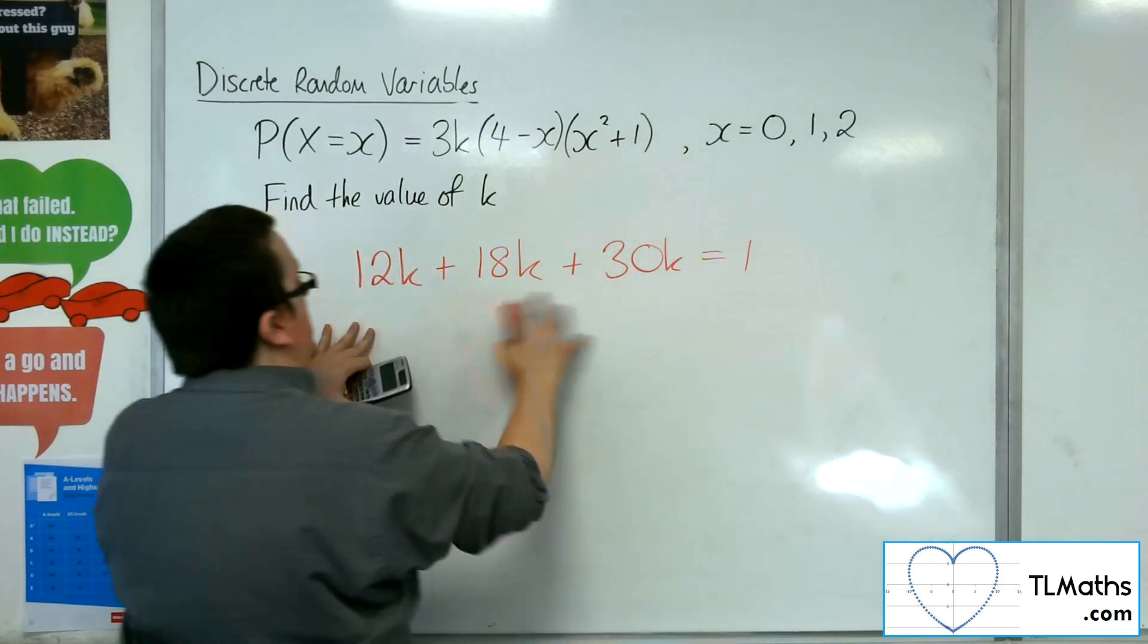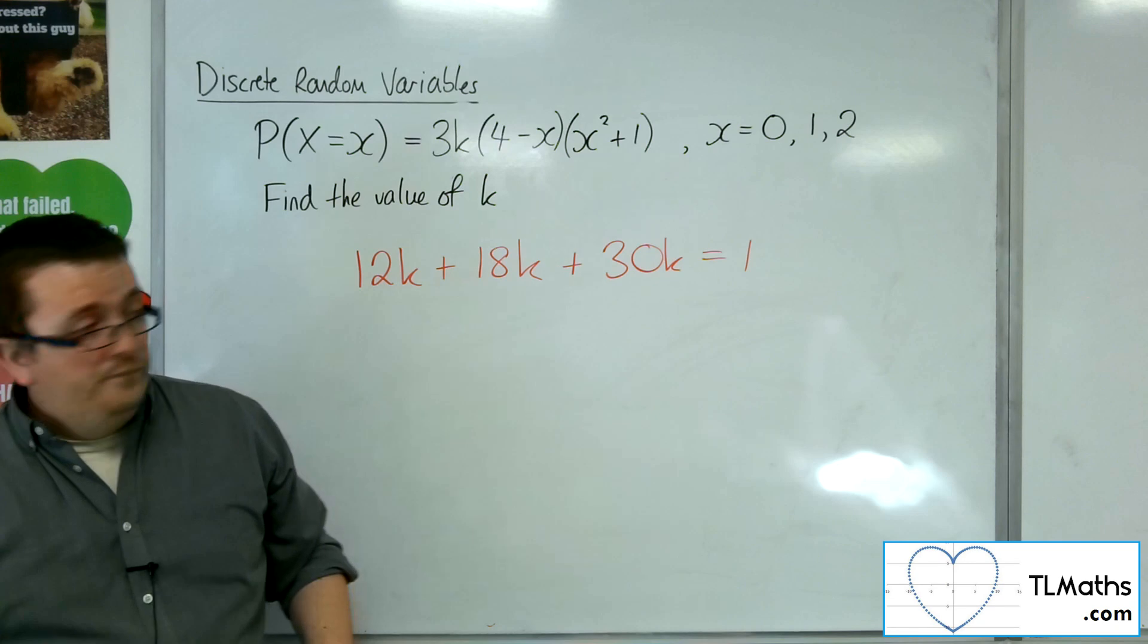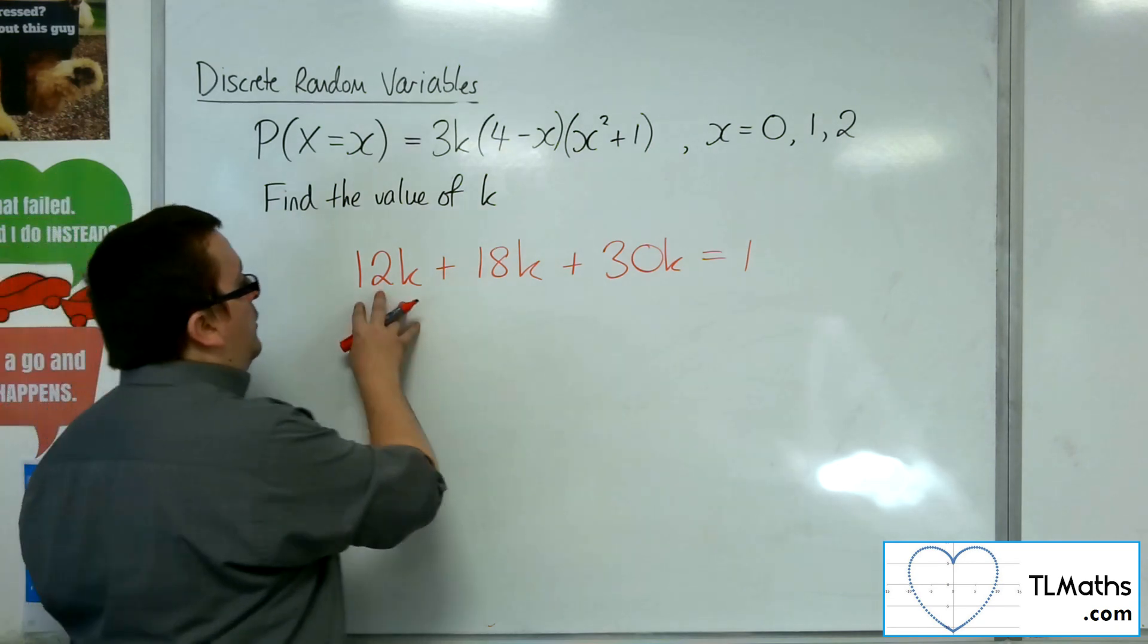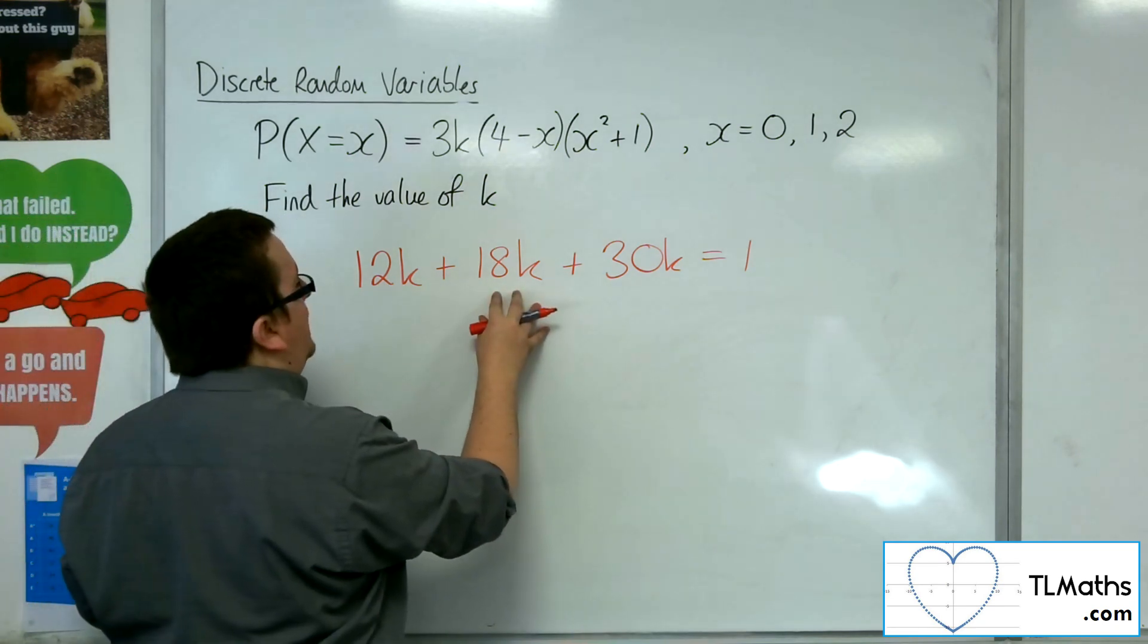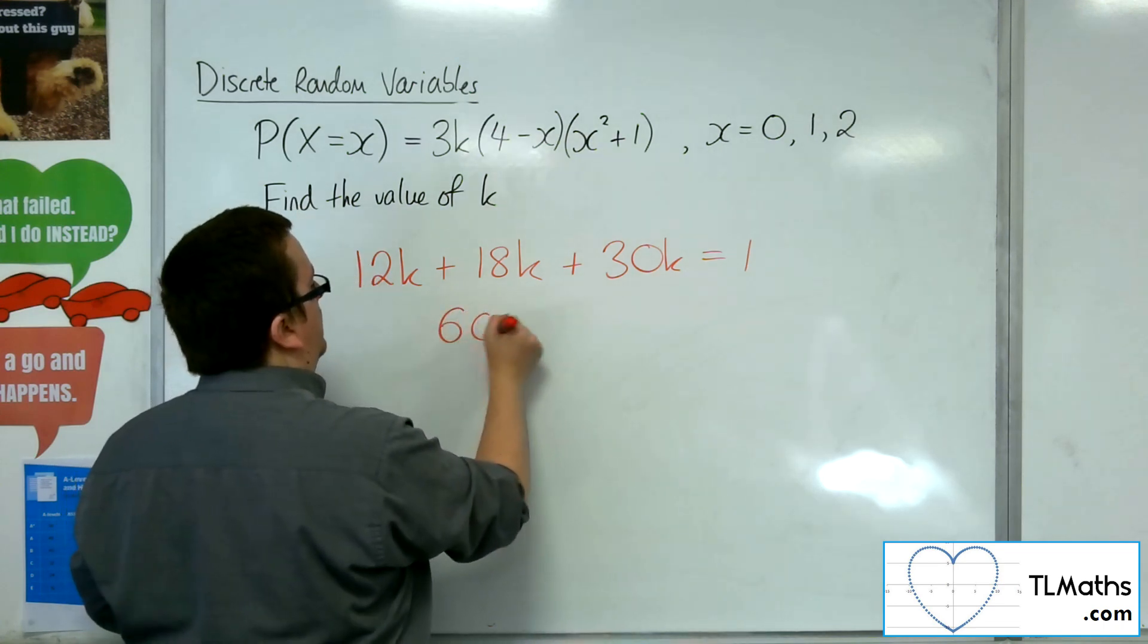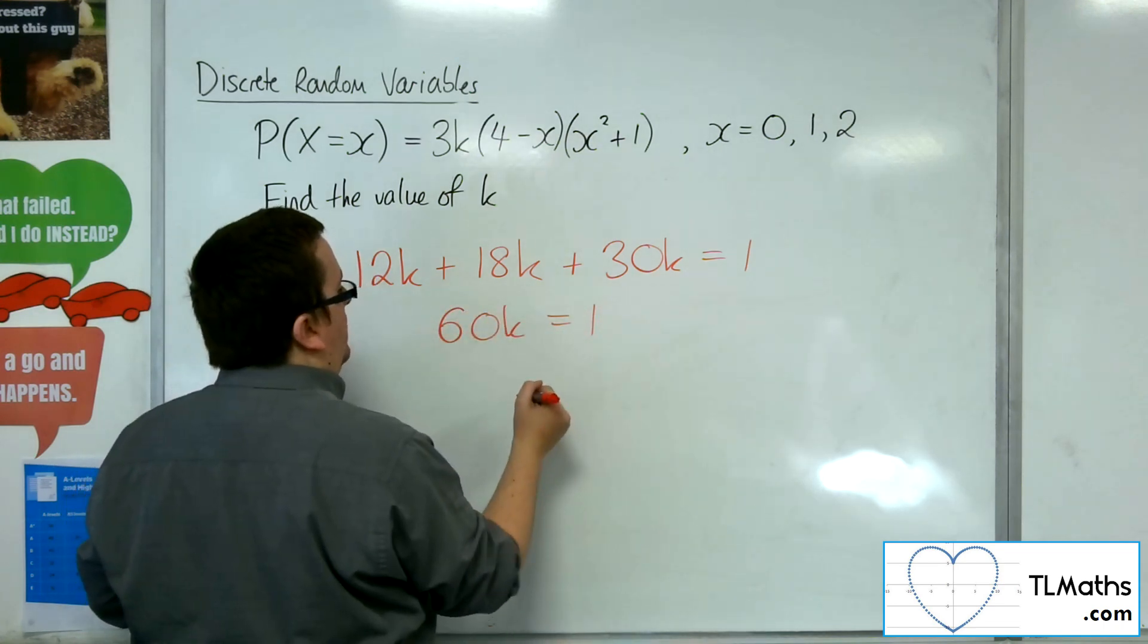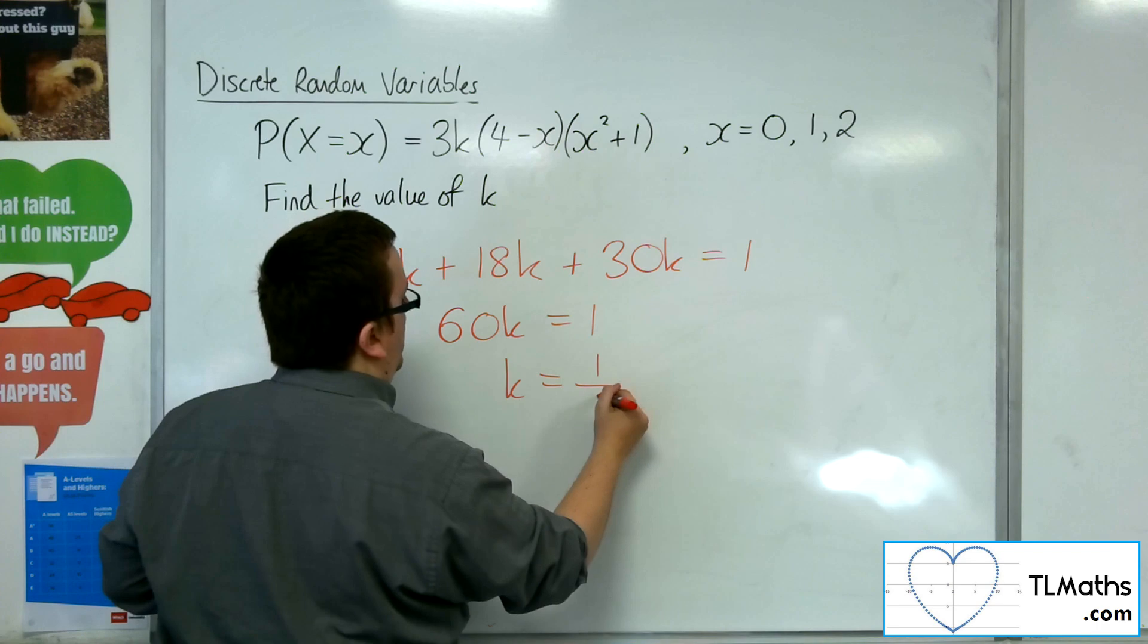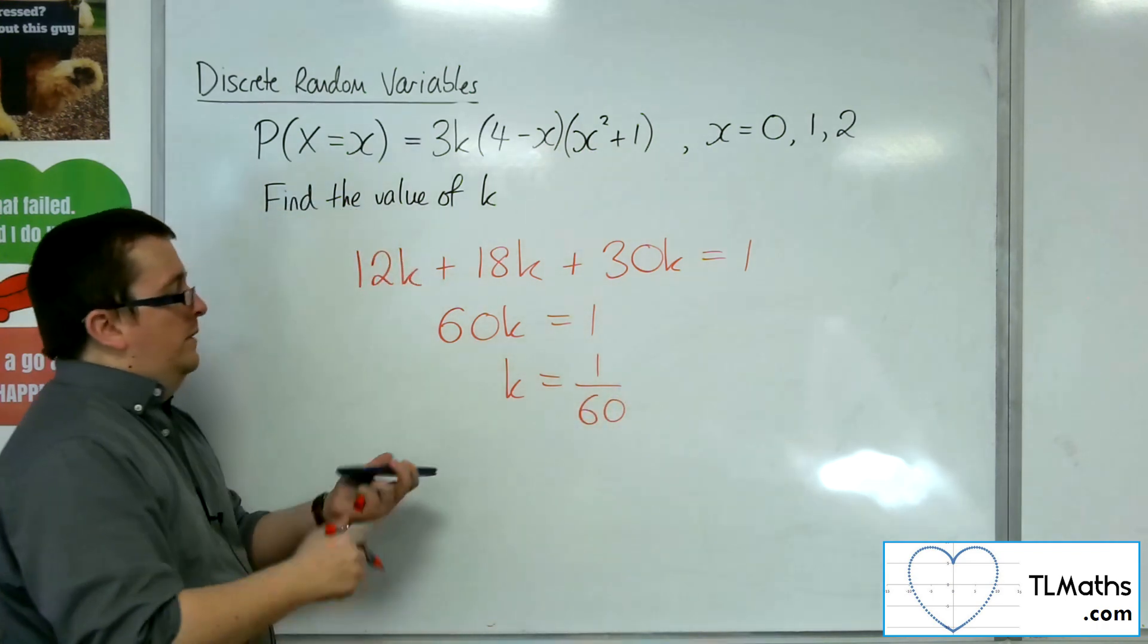So those three probabilities that I get must add up to 1. So I've got 12k, 18k is 30k, plus 30k is 60k, must be equal to 1. So k would have to be 1 over 60, as required.